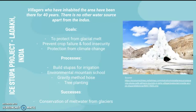The processes here include building stupas for irrigation — this is an ice stupa — as well as establishing an environmental mountain school, using gravity-method hose technology, and encouraging tree planting. The successes include conservation of meltwater from glaciers. However, climate change continues to disrupt progress to an extent.